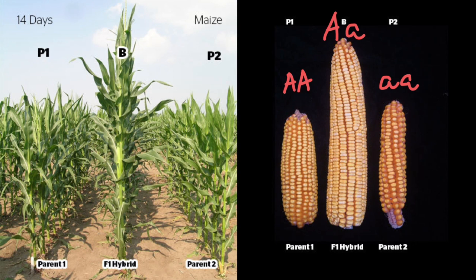You also have to understand that parent one doesn't necessarily have to be capital B, capital B for gene B, and parent two small b, small b. They just have to be fixed. For example, parent two can be capital B, capital B, and parent one can be small b, small b. For gene B, the progeny would be capital B and small b — again, heterozygous. But if both parents for gene C are fixed with small c, small c, then the progeny would also inherit only small c from each parent. On average, though, the F1 hybrid would have many more loci that are heterozygous.